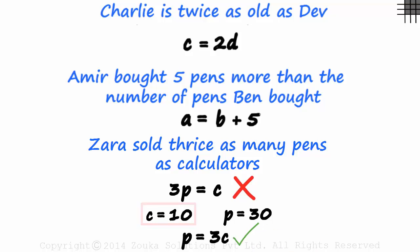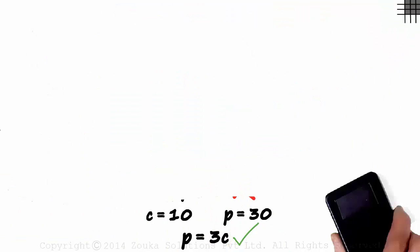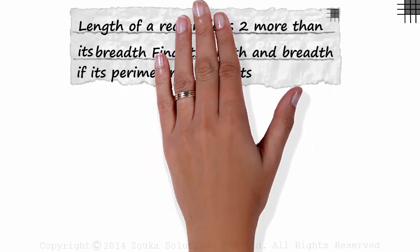If C is 10, then P will be equal to 3 times 10, 30 units. 3C tells us thrice as many as calculators. Now we can move on to an actual example.